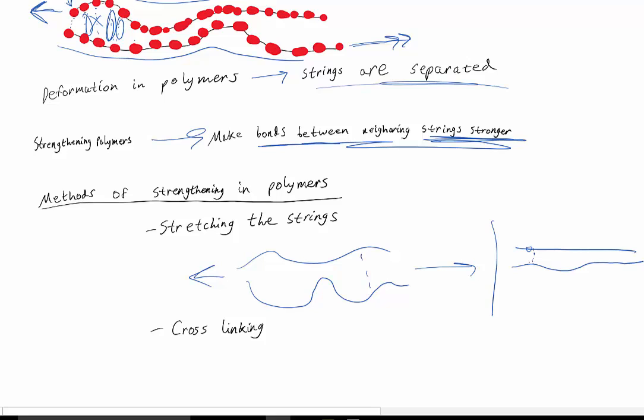And they're lined up better, say here and here, versus here and here where it's all curved, so they're not lined up as well. This causes stronger bonds between neighboring strings.